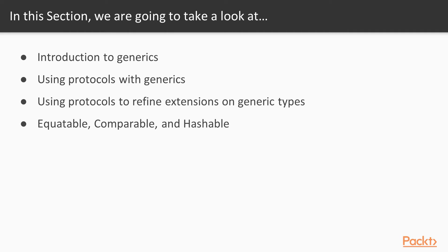In this section we'll start with an introduction to generics, showing you what generics are and how you can use them. We'll then move on to showing you the power that the use of protocols can bring to generic functions and types. Then we'll cover how you can use protocols to refine extensions on generic types so that they're only applicable when a given placeholder meets the requirement. And finally we'll cover some of the powerful standard library protocols such as Equatable, Comparable and Hashable, showing both how to conform to these protocols and how to use them when writing generic code.